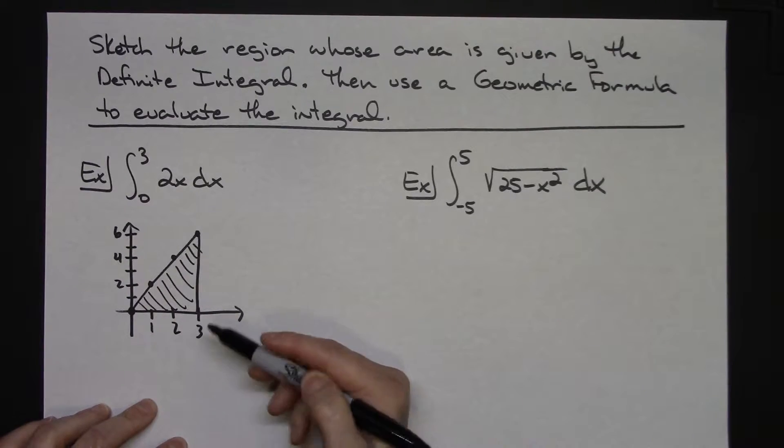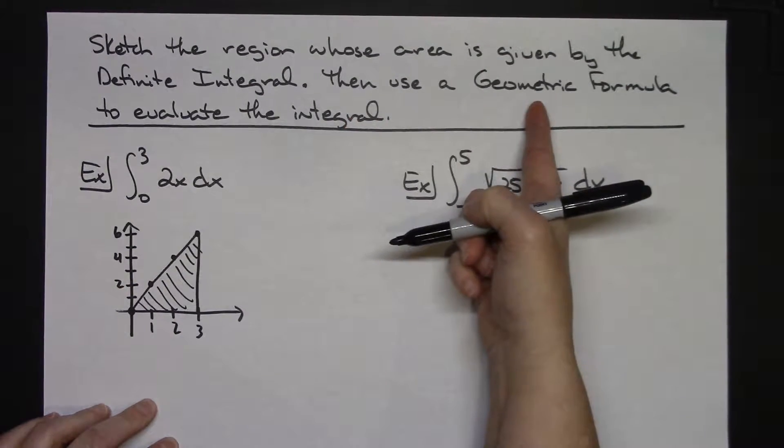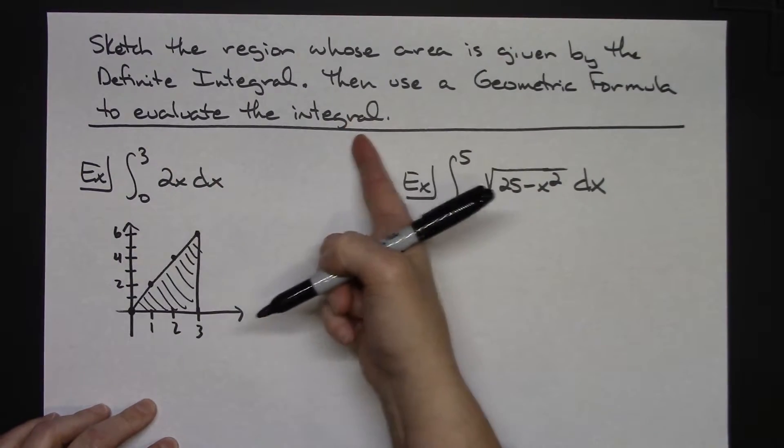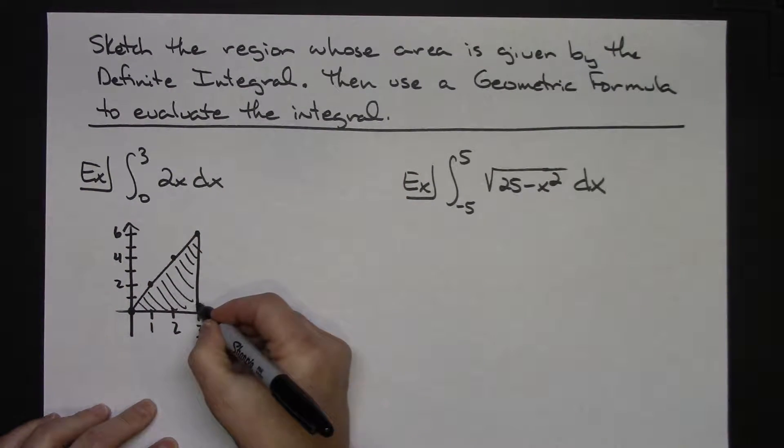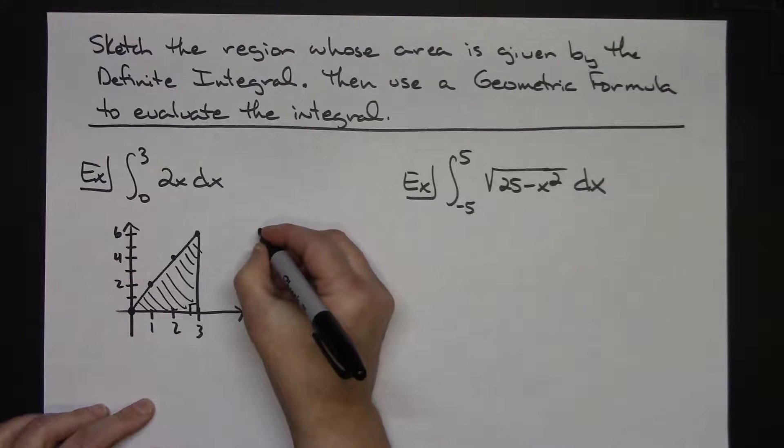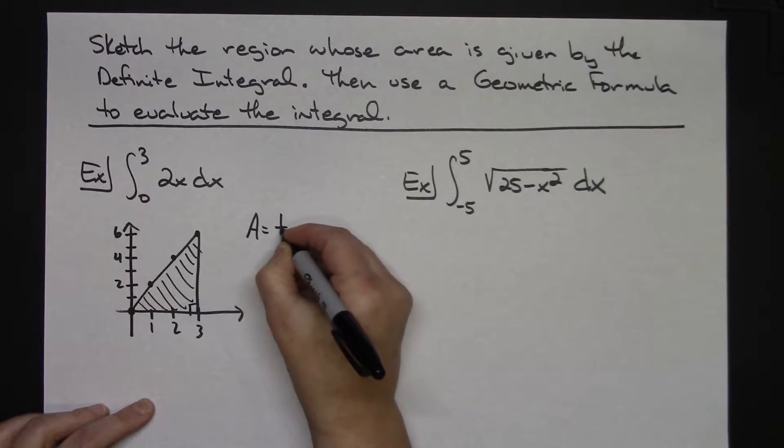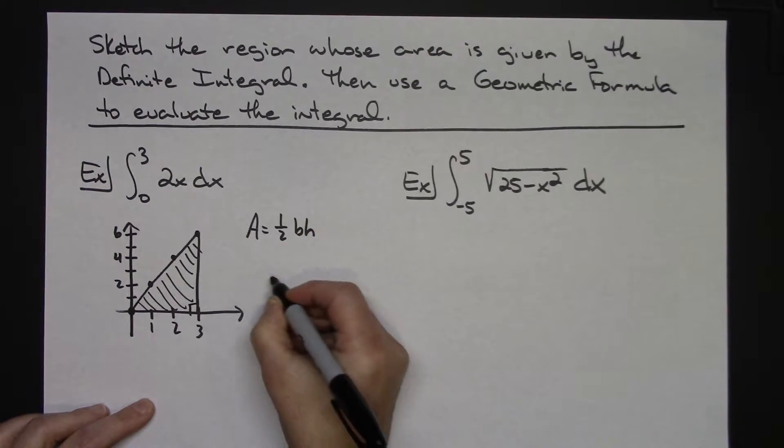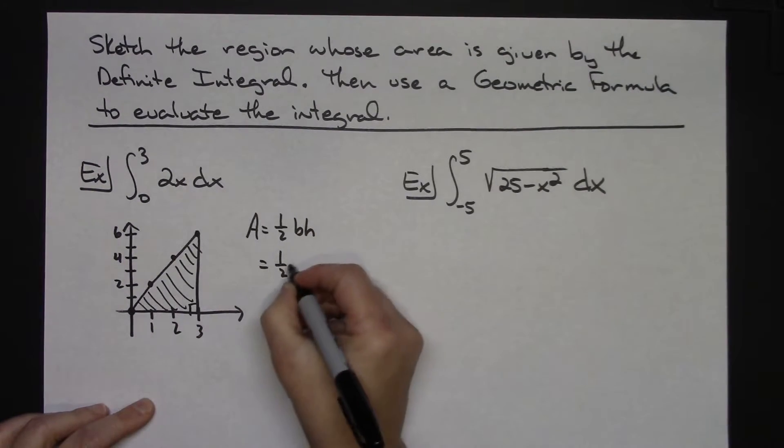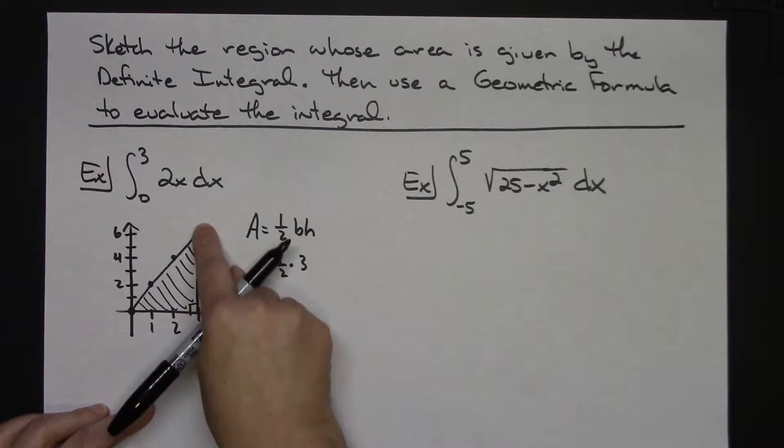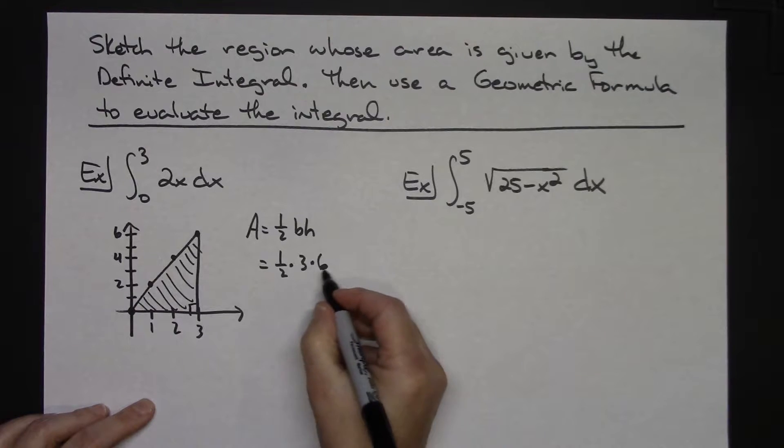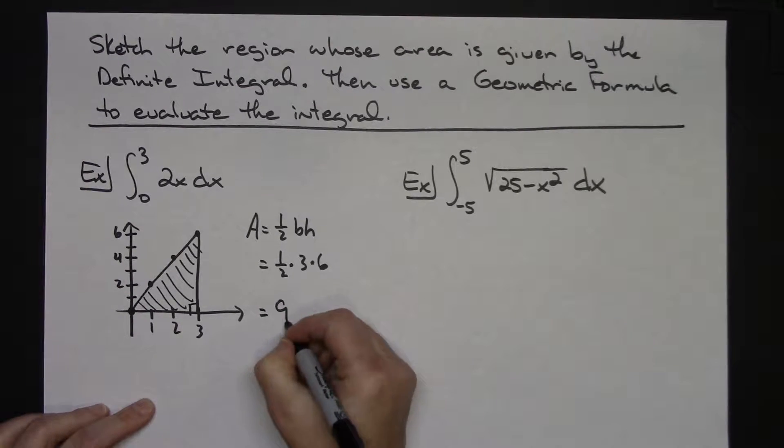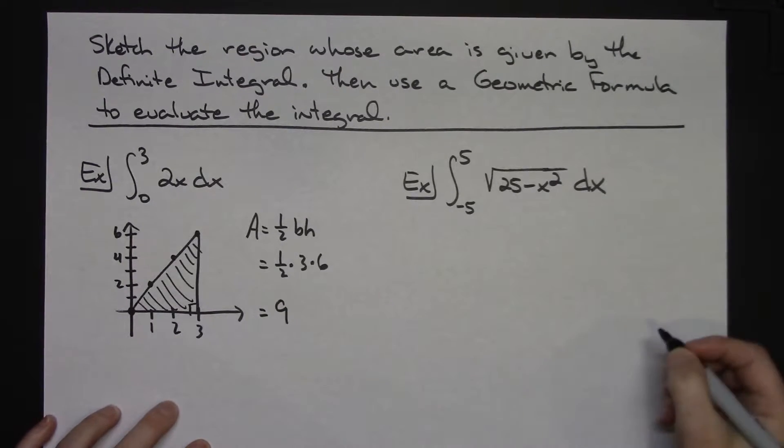So there's my sketch showing where the region would be, and then it says to use a geometric formula to evaluate that integral. Well, it clearly is a right triangle. So I can just use the 1 half base times height for my area. So 1 half base times height. Let's see, my base here would be a base of 3, and my height would be a height of 6. So 18 divided by 2 is going to give me 9 there.